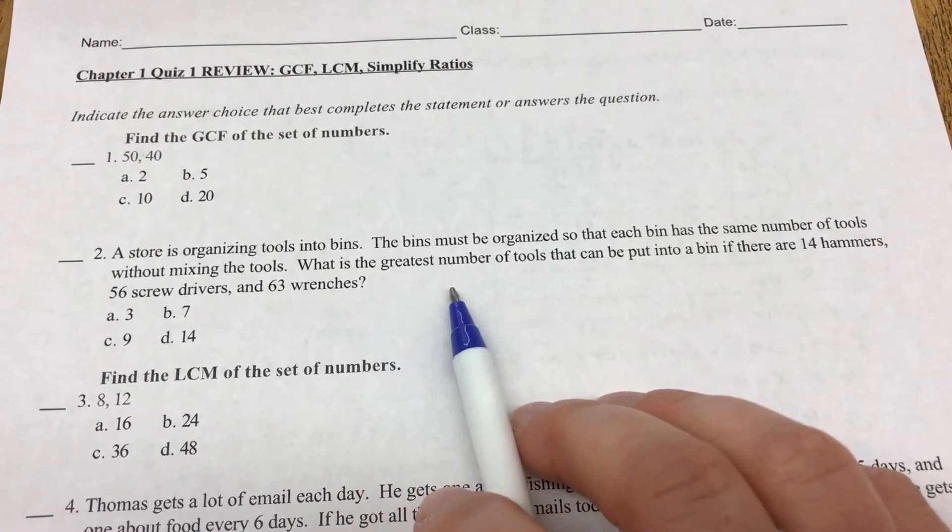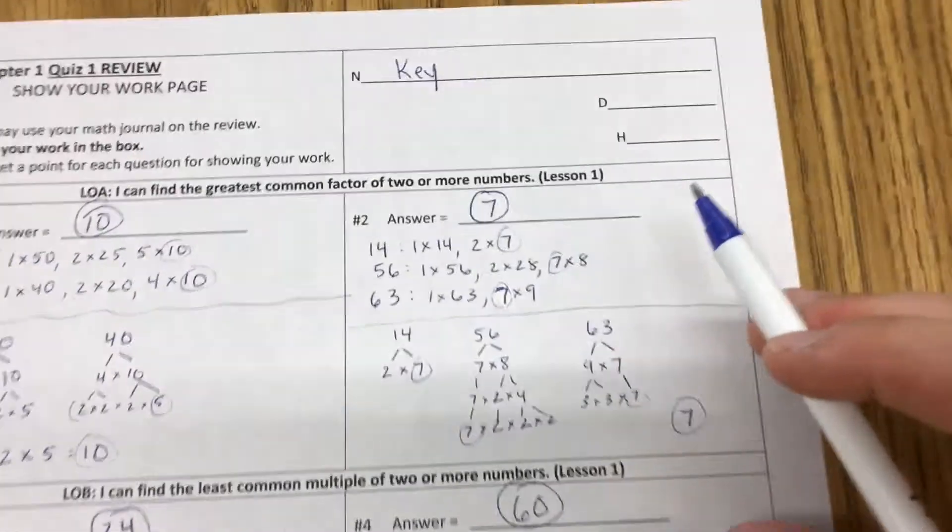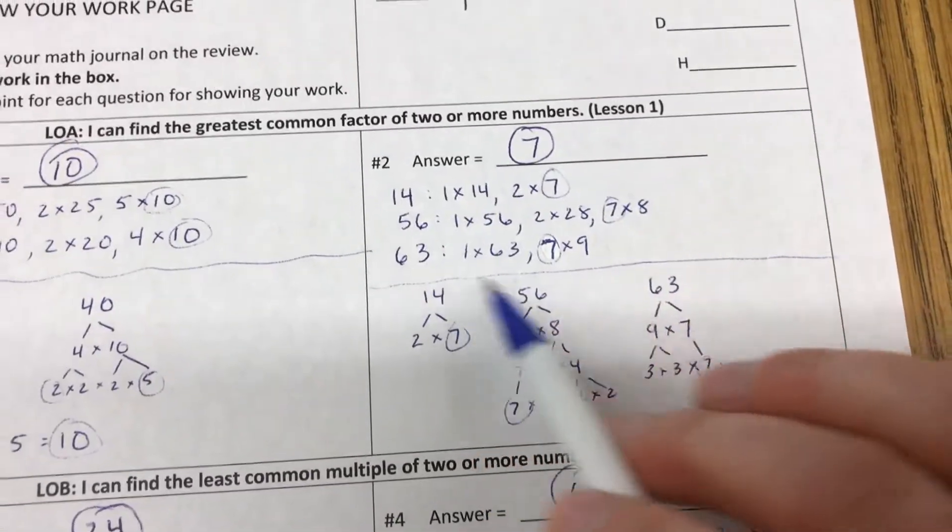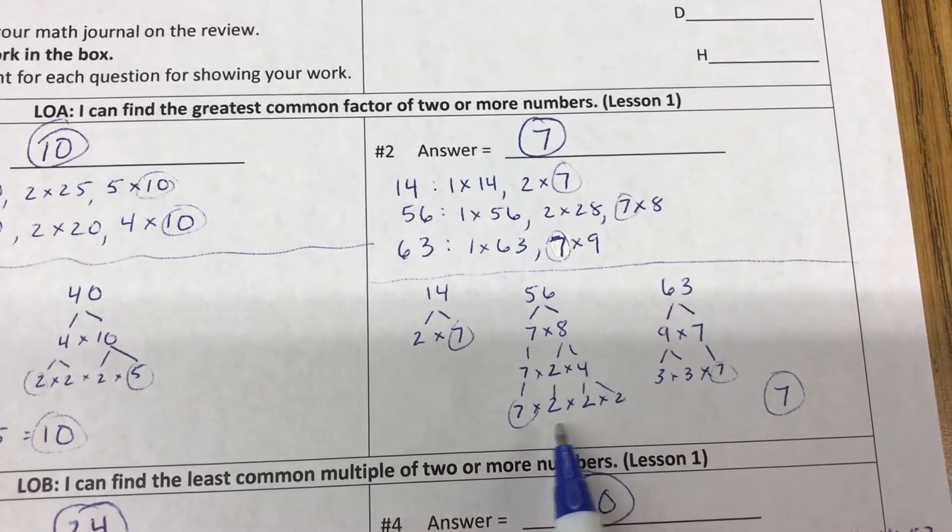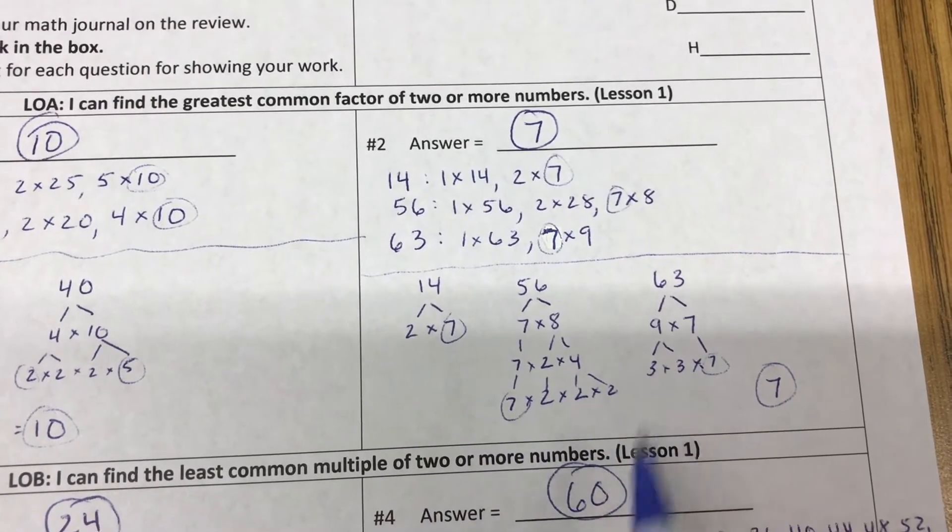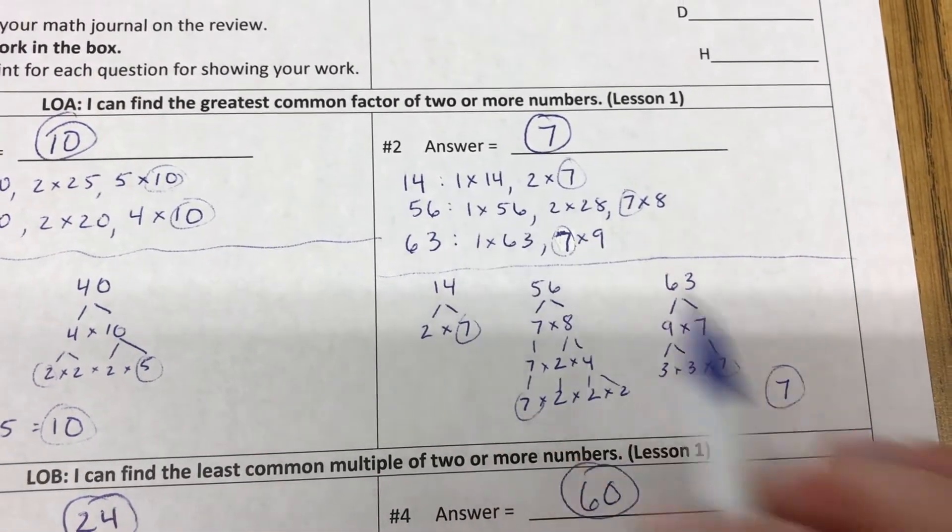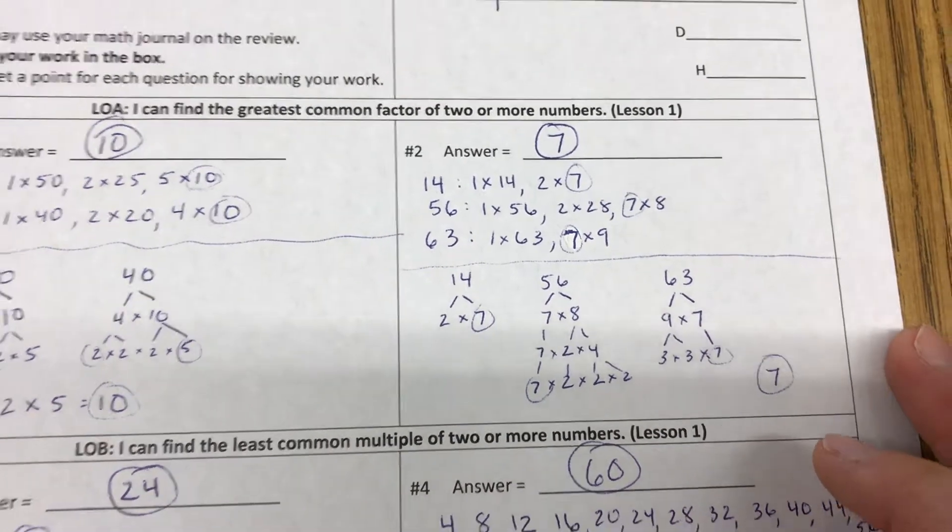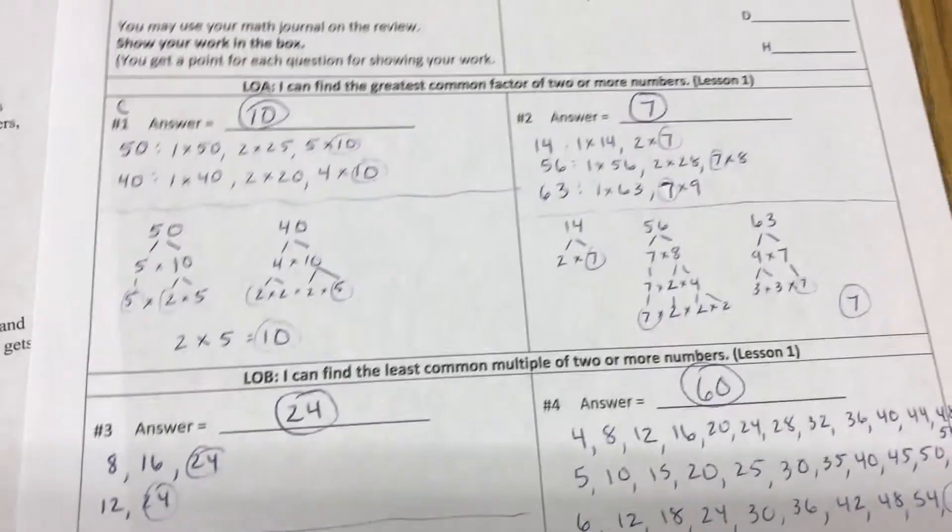Here's the key: we're doing greatest common factor. What's the greatest number of tools? So we have 14, 56, and 63. Here's my list with the factors in there, and here are my factor trees. They all had 7 in common and that was the only factor they had in common, so 7 is the greatest common factor.